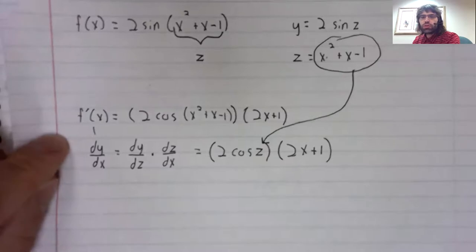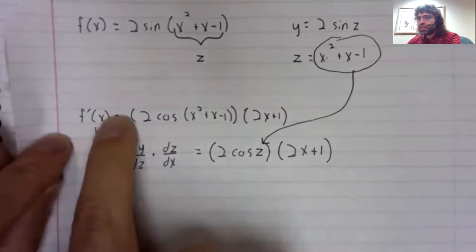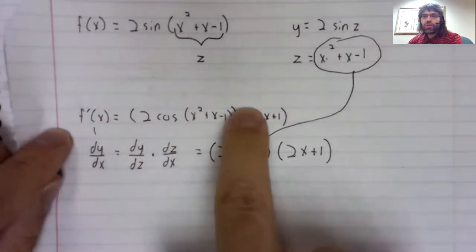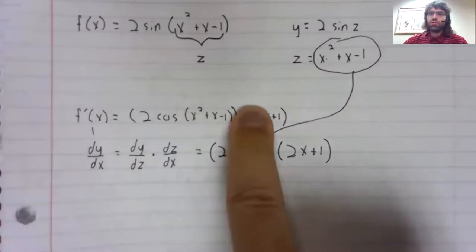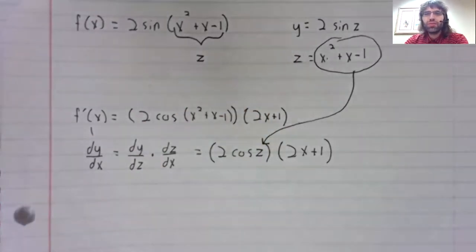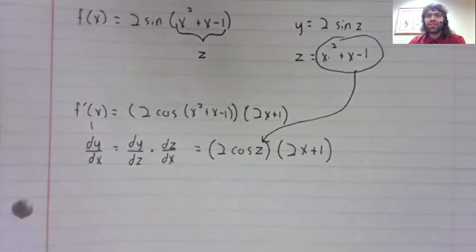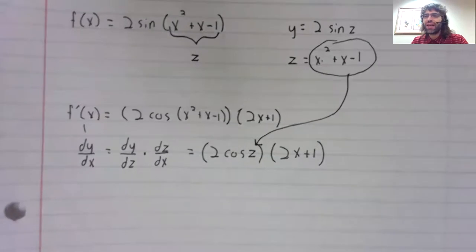And of course, also the derivative according to version one of the chain rule. It would hardly do to do the same problem twice and get two different answers.